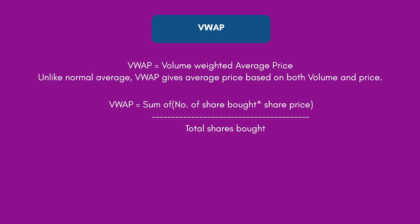The formula to calculate VWAP is: VWAP = Sum of (number of shares bought × share price) divided by total shares bought in that particular time frame. When considering price, we use: Price = (High + Low + Close) / 3 — basically the average price — and this is how VWAP is calculated.